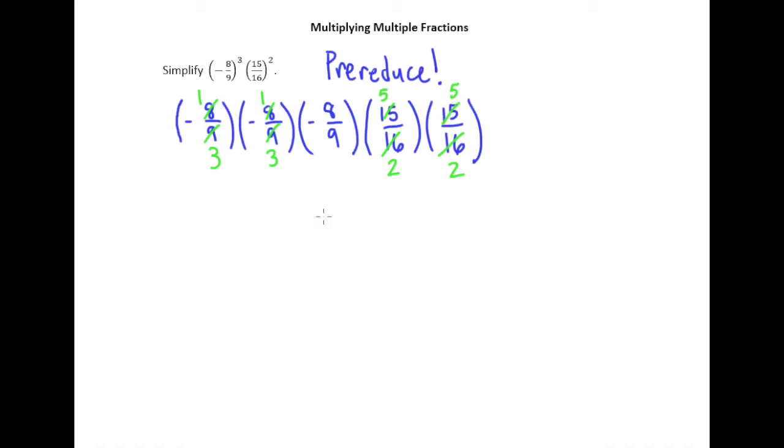Now, you might already be identifying some more that can be done here. But as we start to cross more and more things out, the work becomes more and more cluttered. So it's never a bad idea after you've had several things cancel out to just rewrite everything. You don't have to do this, but I think it helps keep things organized. And don't forget about your negatives that are coming along for the ride.